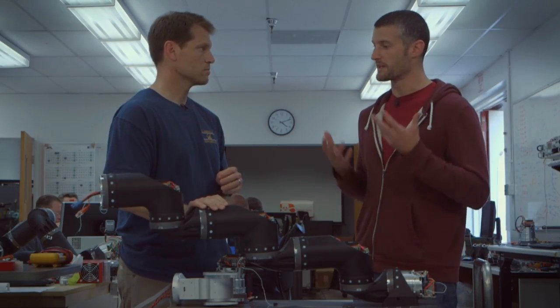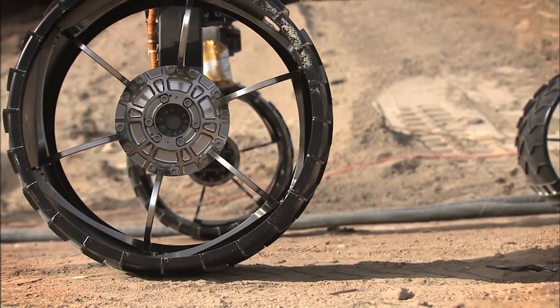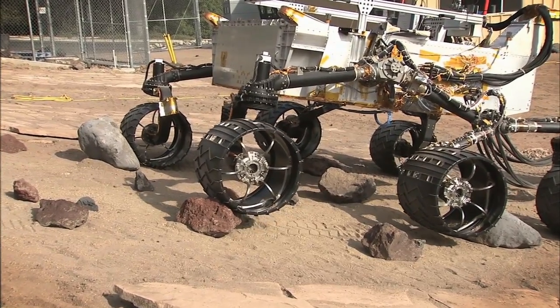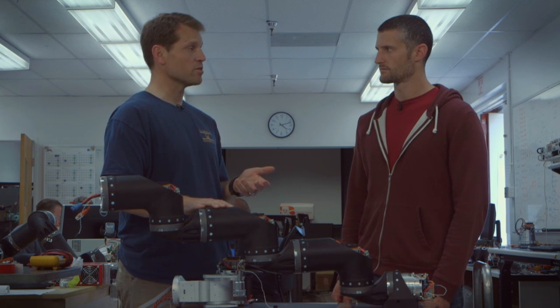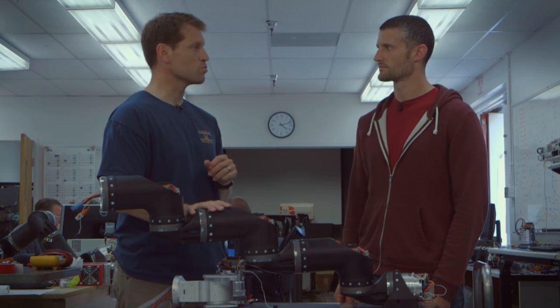So JPL is kind of known for making rovers, and everyone knows that rovers have wheels and we kind of climb over rocks. Why did your team decide to go with limbs instead of wheels? If you can get away with wheels, wheels are great. They're the most efficient way of getting around. But once you get into terrain that's too rough, then we need to switch over to a different method.